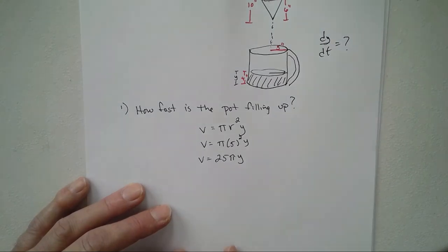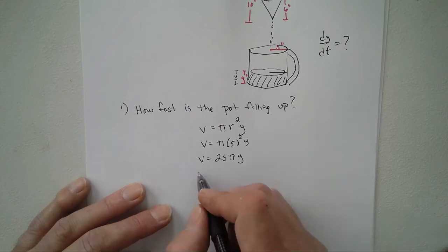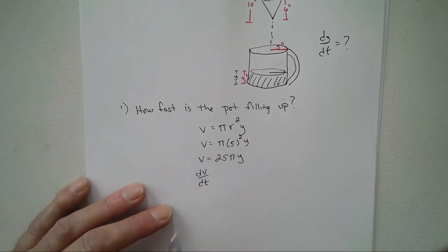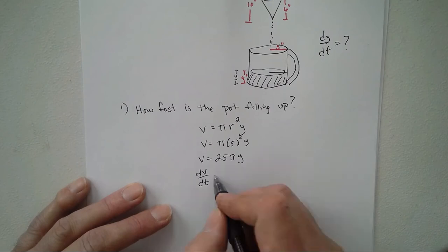Once we have our equation, we find our derivative with respect to time. So dV/dt equals 25π dy/dt.